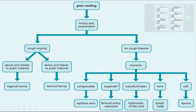If there is no cough impulse: check if it is at the saphenofemoral junction and compressible — think saphena varix. If it is expansile with fingers moving apart, think femoral artery aneurysm or pseudoaneurysm, especially in two cases: IV drug users or patients with recent intra-arterial vascular access such as post-PCI. Always document whether the patient is a recent IV drug user or had recent vascular access.